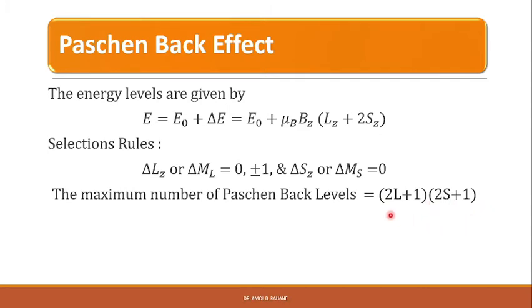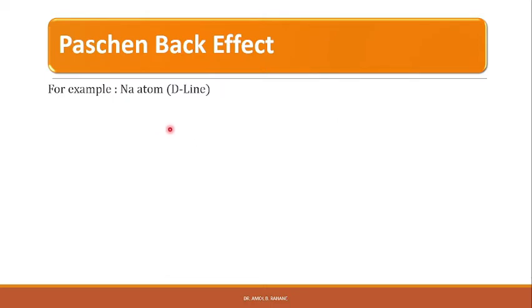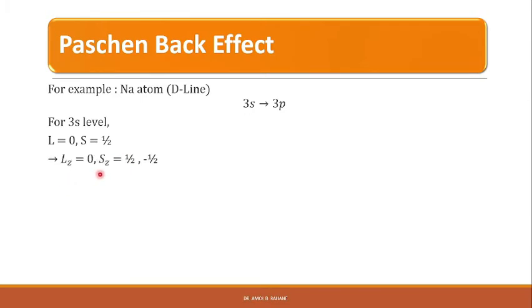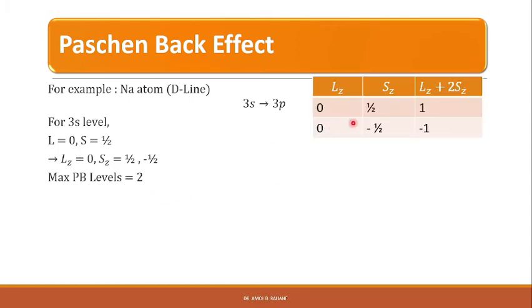For example, consider the sodium atom. The D line corresponds to the 3S to 3P transition. For the 3S level, L = 0 and S = 1/2, giving LZ = 0 and SZ = ±1/2 — two values. Maximum Paschen-Back levels = (2L+1)(2S+1) = 2. The LZ + 2SZ values for these two levels are +1 and −1.